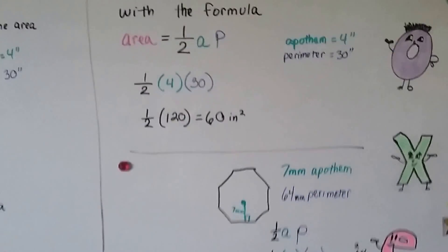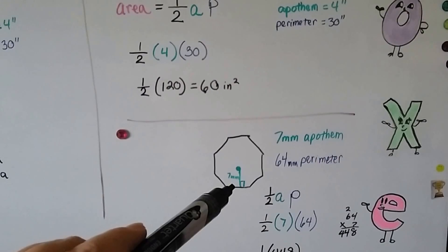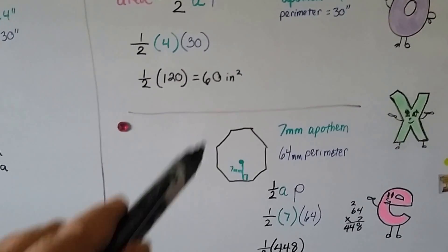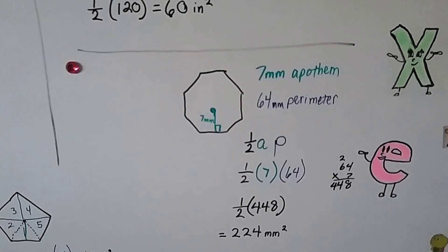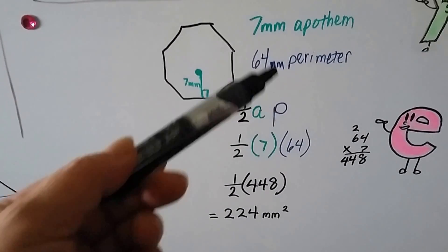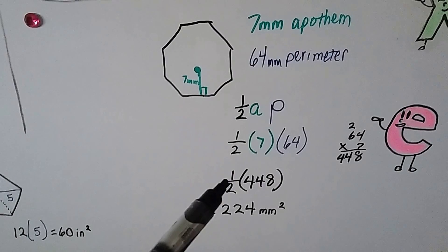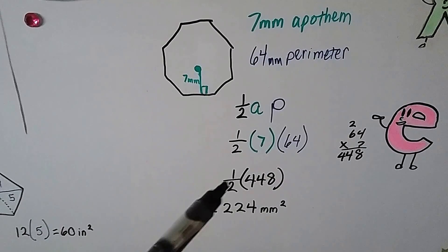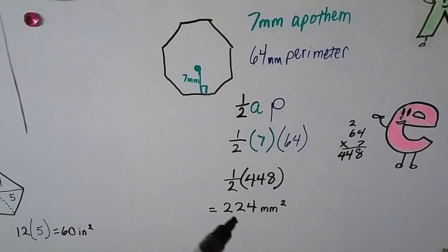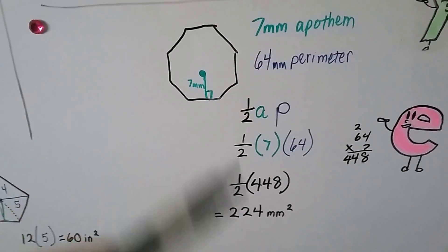Let's try it again. We know our apothem in this octagon is 7 millimeters. We know the perimeter is 64 millimeters. So all we have to do is half AP. We multiply 7 times the perimeter 64 and get 448. We cut that in half or multiply it in half, divide it in half, whatever, and we get 224 millimeters square. See? More straightforward, isn't it?